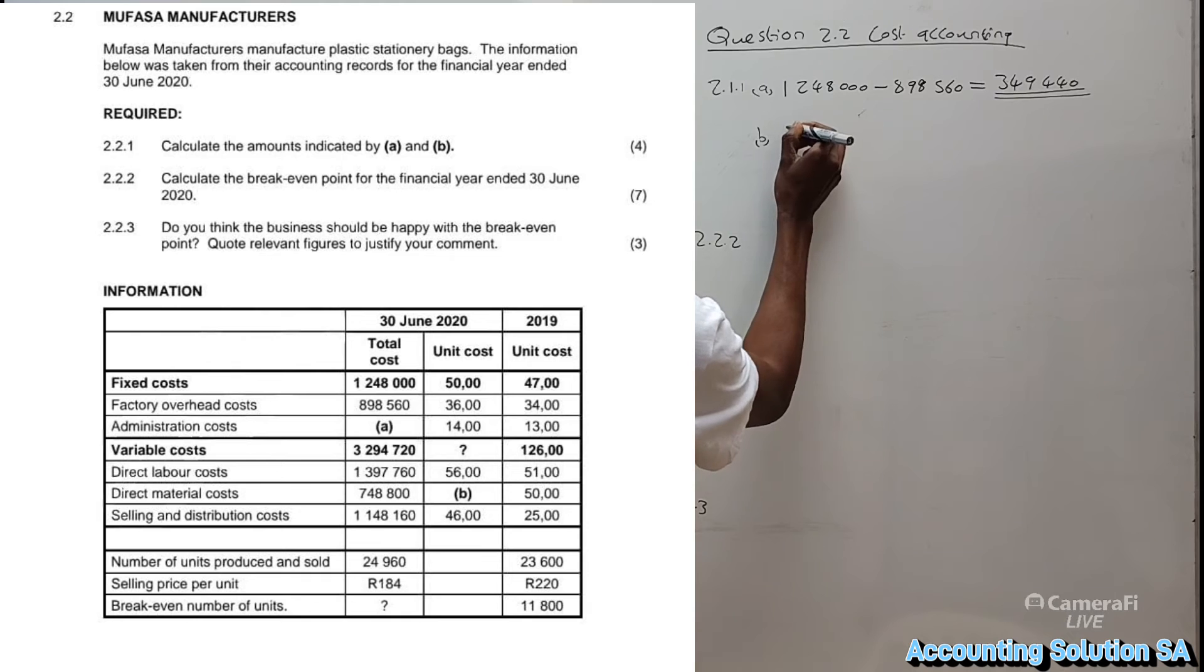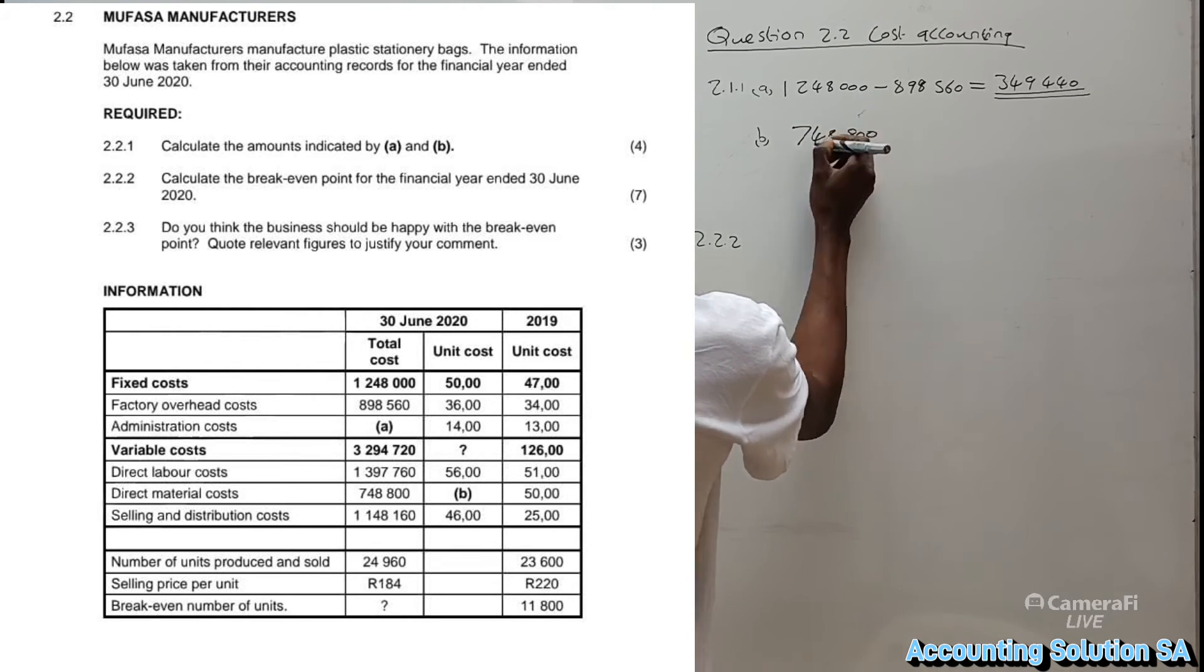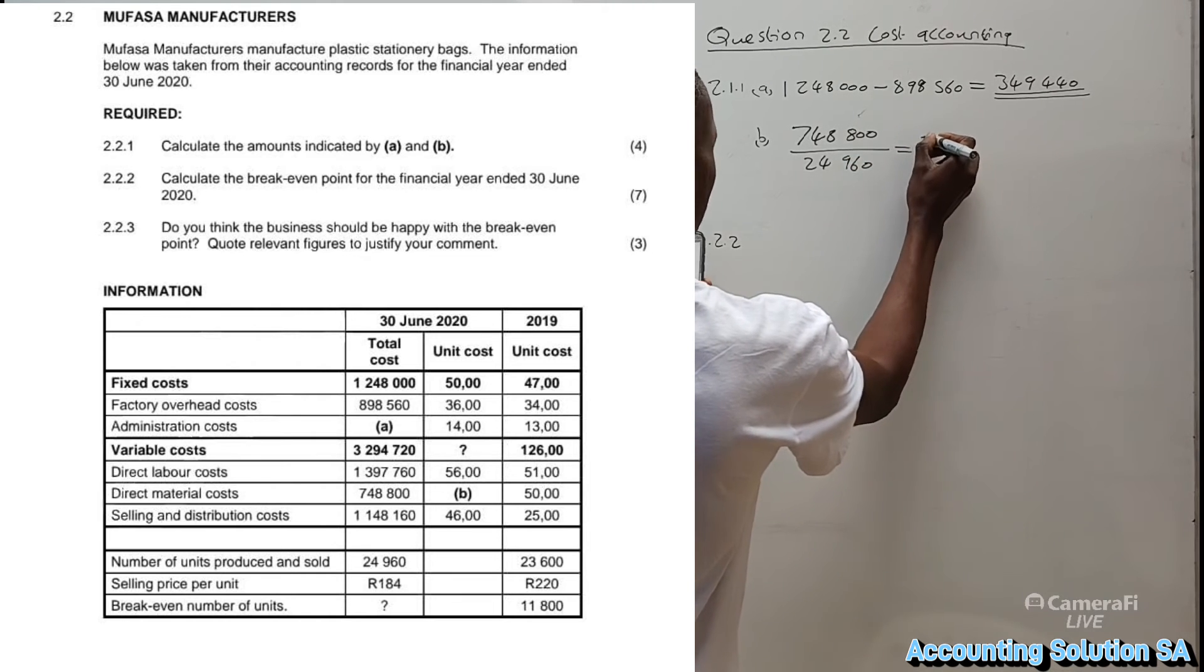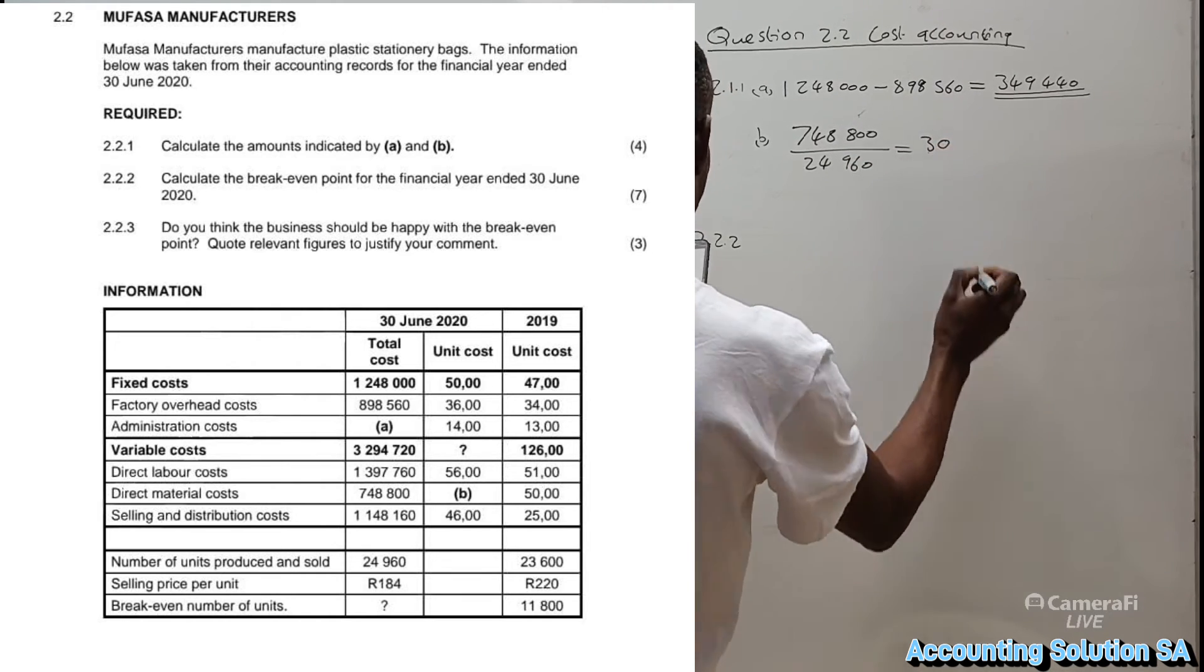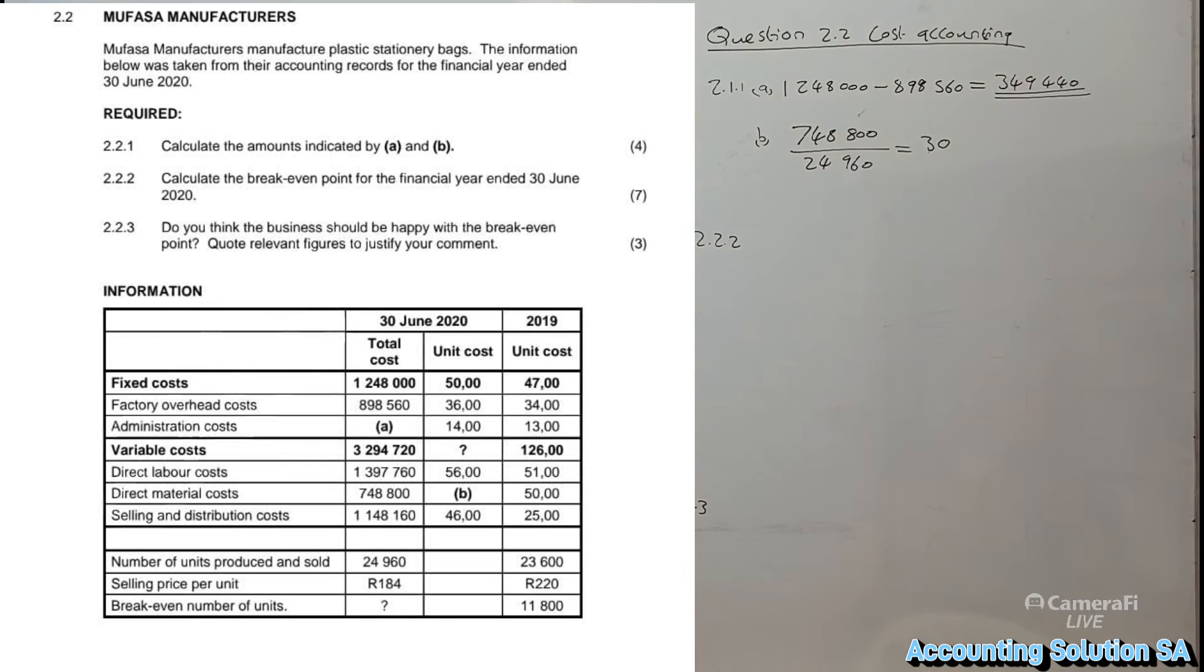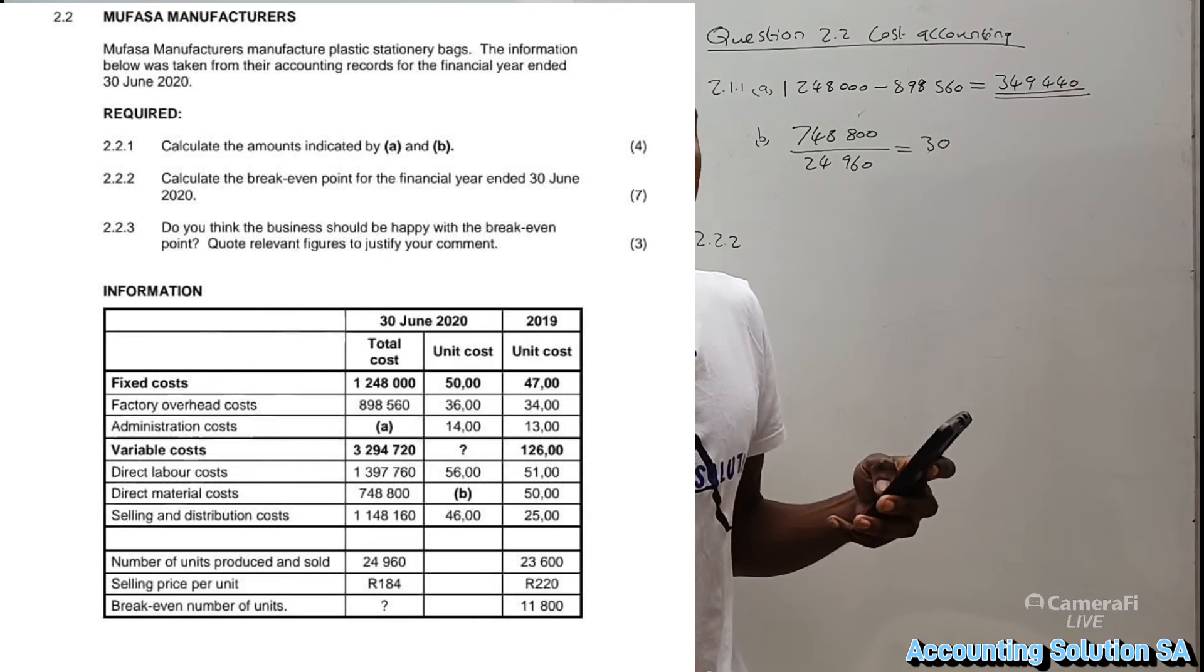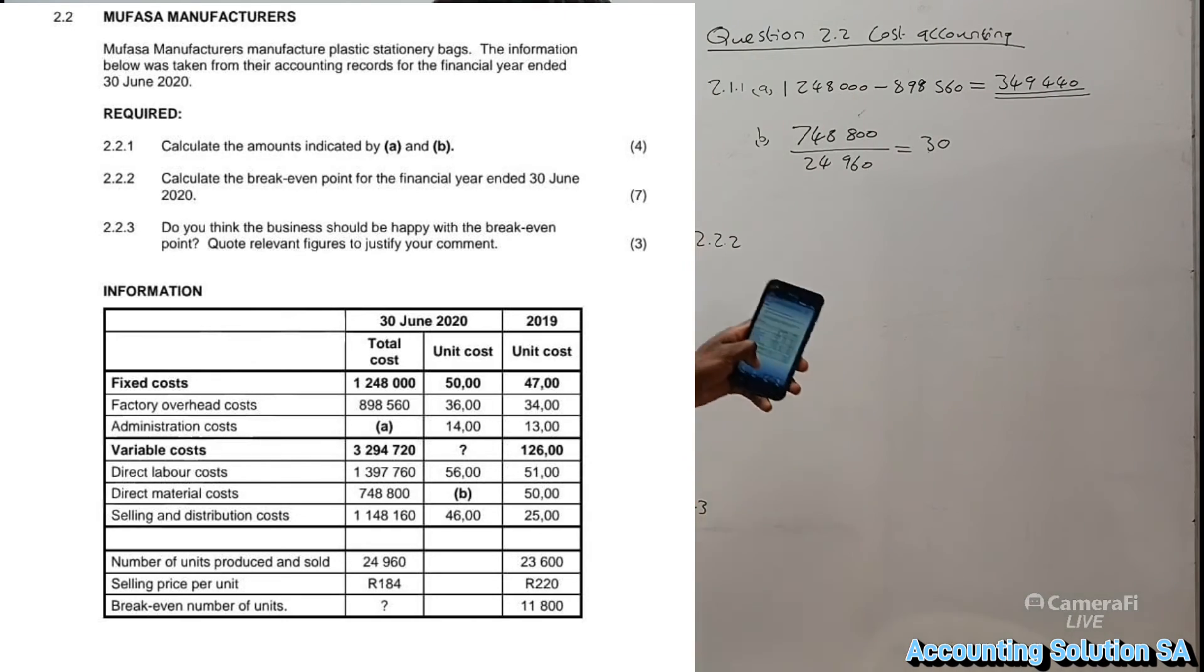We are going to take direct material of 748,800 then divide by number of units produced, 24,960, and we will get 30 rand per unit. Make sure you get this correct because it's going to affect your calculation of 2.2.2.